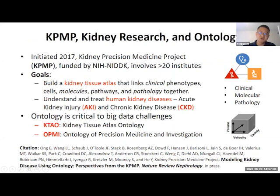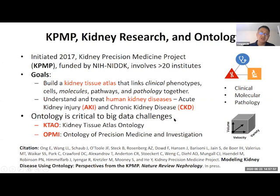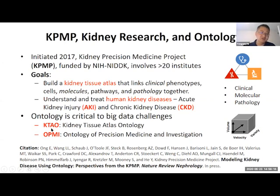We have a funding project called KPMP—the Kidney Precision Medicine Project—funded by the NIH, with more than 20 institutes coming together. We want to build a kidney tissue atlas linking cell types, cell molecules, and pathology with patients to better understand human diseases including acute and chronic kidney disease, and to develop methods to control those diseases. We are developing two ontologies: KITAR (Kidney Tissue Atlas Ontology) and OPMI, focusing on precision medicine in general.